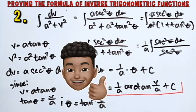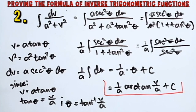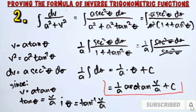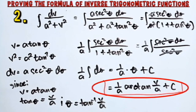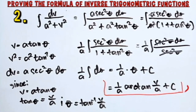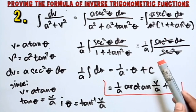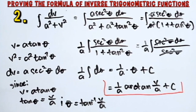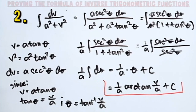We have proved the formula for the arctan: the integral of dv over a² plus v² is equal to (1/a) arctan(v/a) + c. This is the solution and proof that the integral of dv over a² plus v² equals (1/a) arctan(v/a) + c.